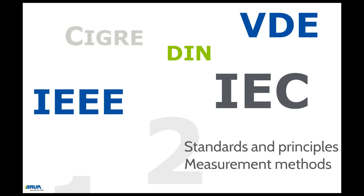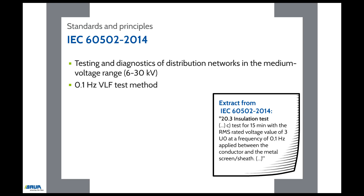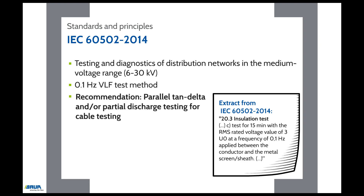IEC 60502, 2014 covers, among other things, testing and diagnostics for distribution networks in the medium voltage range from 6 to 30 kV. An update to the standard led to the inclusion of the 0.1 Hz sinusoidal VLF test method and the recommendation of TAN-delta and/or partial discharge testing to accompany cable testing. The simple DC test for plastic cables was removed from the standard.